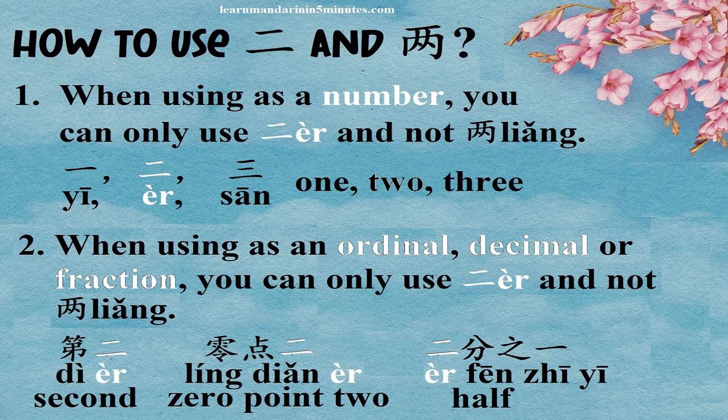How to use 二 and 两? When using as a number, you can only use 二 and not 两. For example: 一, 二, 三.